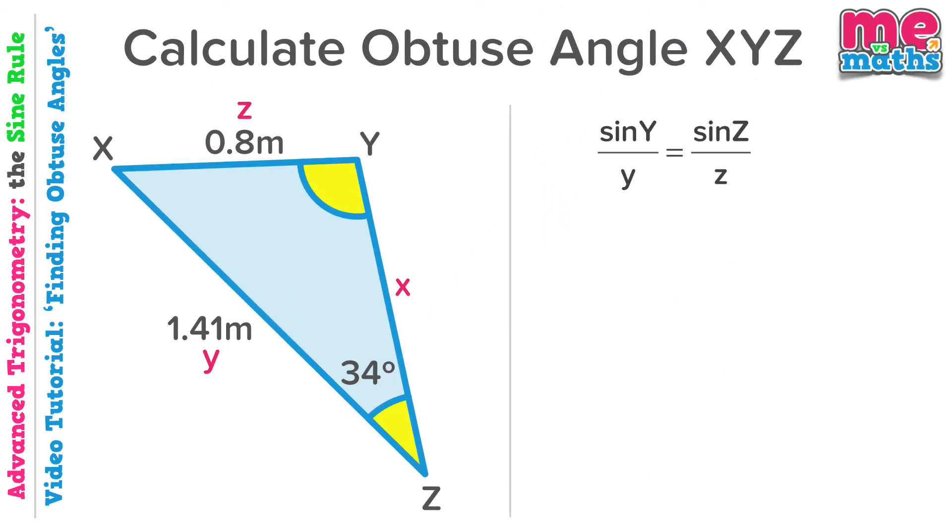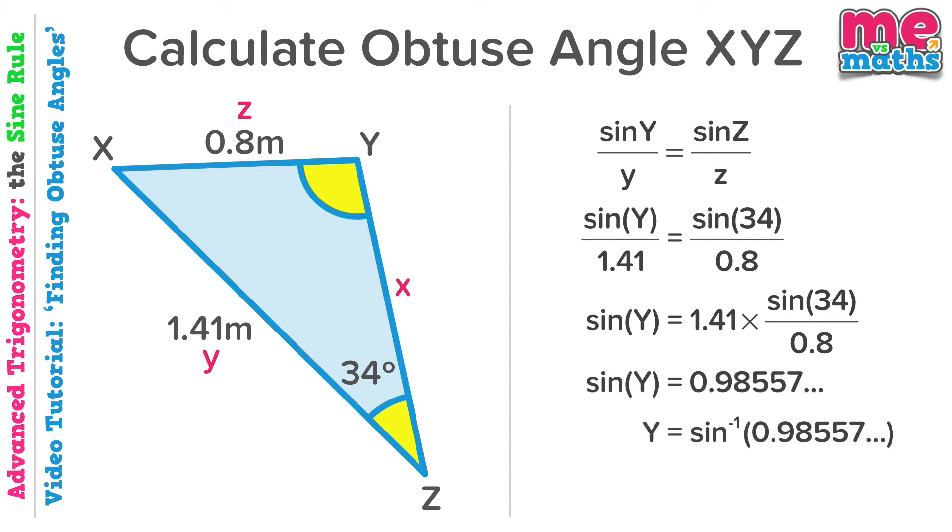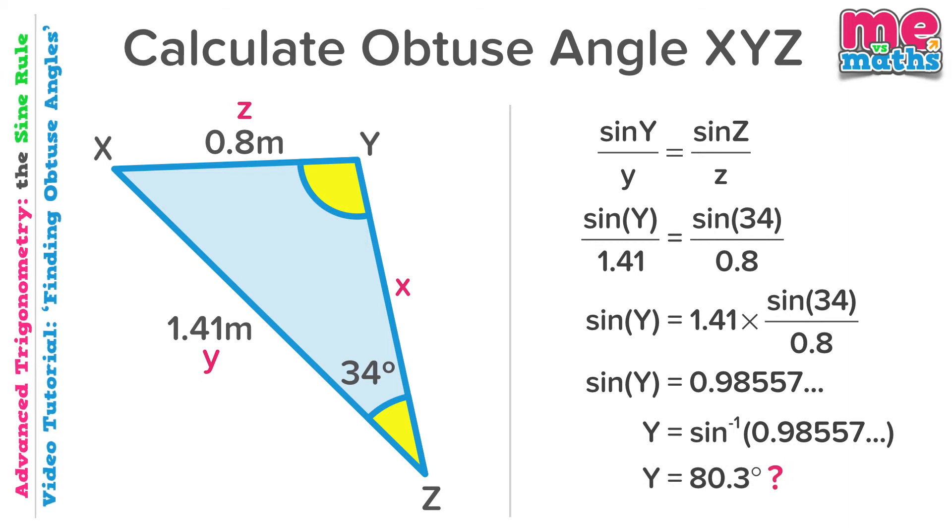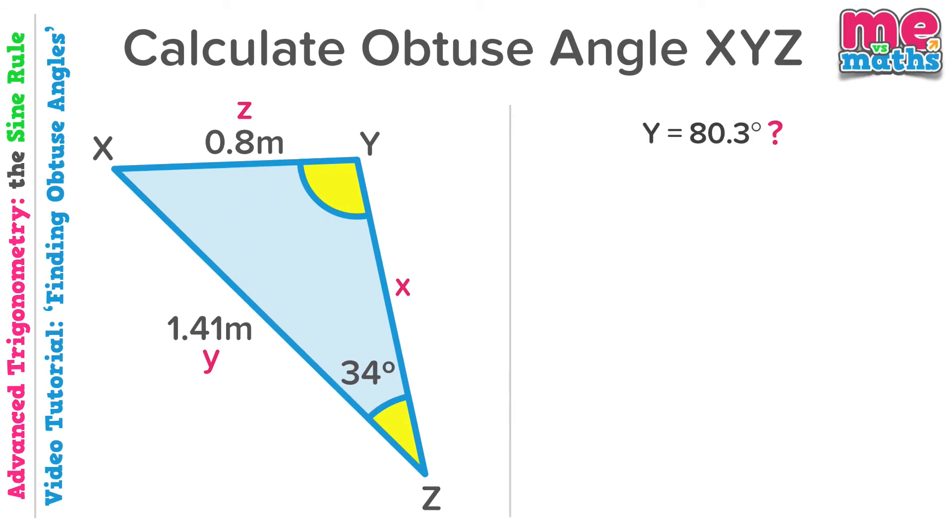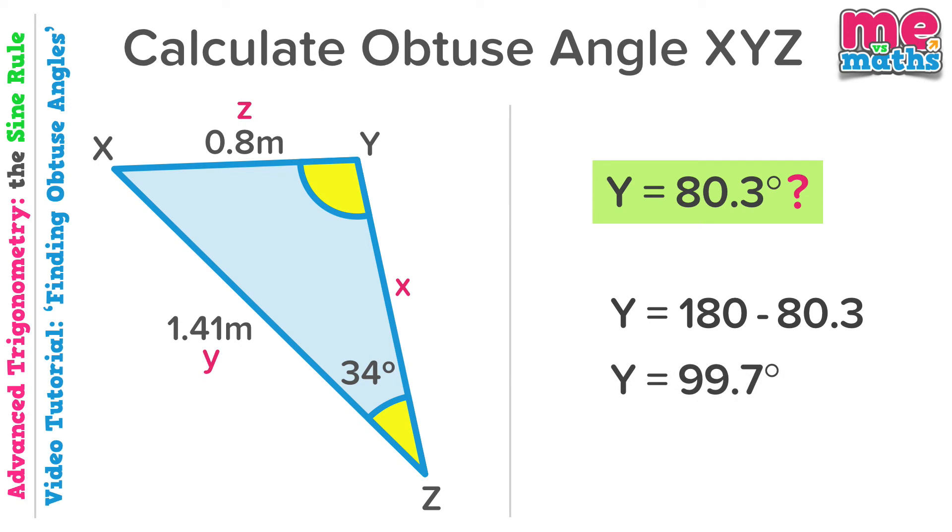Let's substitute our values in. Multiply by 1.41 to tell us what sine Y is equal to. Use inverse sine to work out the value of angle Y which appears to be 80.3 degrees. As we know it can't be this as our answer is acute and it should be obtuse. So to find the obtuse solution we'll use what we've just learnt and subtract our 80.3 from 180 to give our final solution of 99.7 degrees. Which is as we want it to be an obtuse angle.